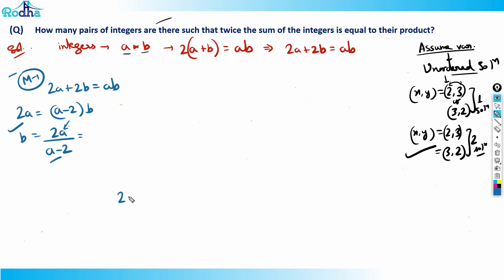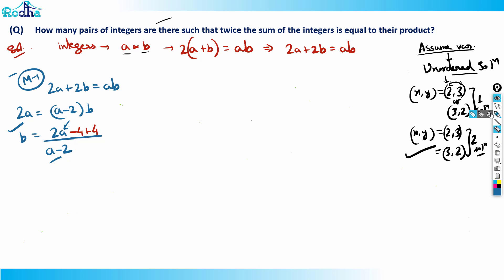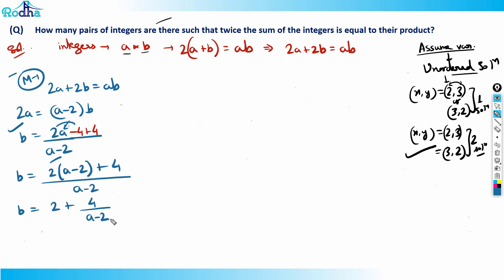To bring (a − 2) into the numerator, I note that 2×2 = 4, so I subtract 4 and add 4. This gives: b = [2(a − 2) + 4] / (a − 2) = 2 + 4/(a − 2). Now, since a and b are integers, for b to be an integer, 4/(a − 2) must be an integer — which means (a − 2) must be a factor of 4.